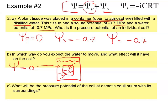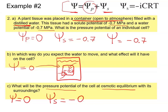Now, what is the pressure potential of the cell at osmotic equilibrium with its surroundings? At equilibrium, the water potential inside the cell equals that of pure water, which is zero. The solute potential does not change because we still have the same concentration of solutes — negative 0.7 megapascals.